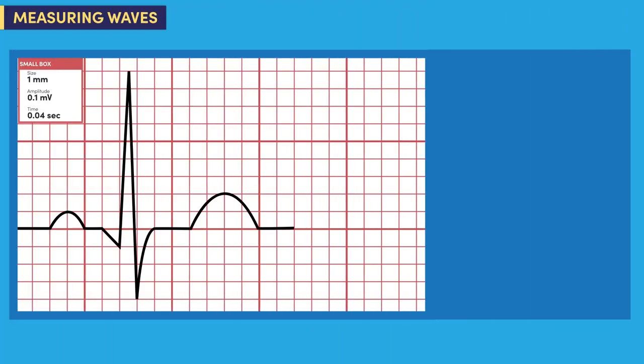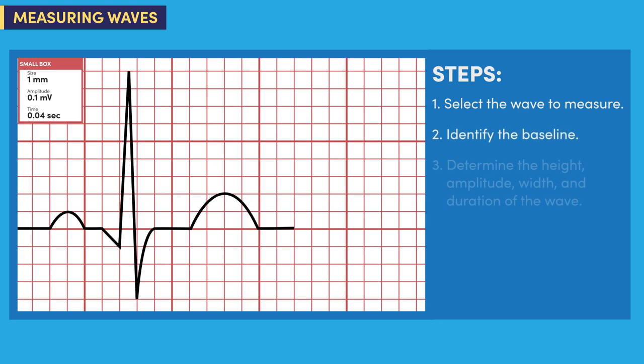Now we will measure the height, width, amplitude, and duration of the waves. Here are the steps we will take to measure the waves. Step one: select the wave to measure. Step two: identify the baseline. And step three: determine the height, amplitude, width, and duration of the wave.